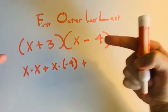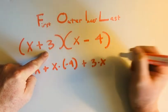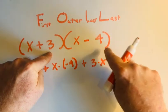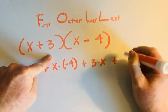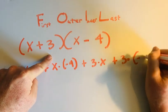Plus my inner terms and that's 3 times x, plus my last term in each parenthesis is positive 3 times negative 4.